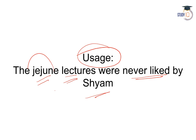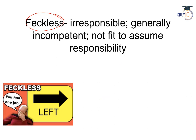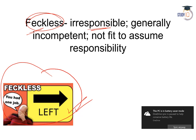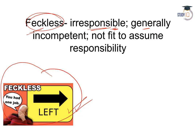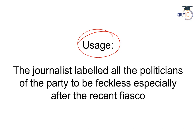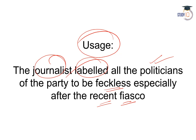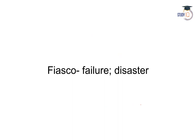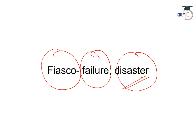The next word is feckless. Feckless ka arth hota hai — you had one job and you left it — that means you are irresponsible, incompetent, la parwa. You are not fit to assume any responsibility. Usage: The journalist labeled all the politicians of the party to be feckless, especially after the recent fiasco — fiasco meaning disaster or failure.